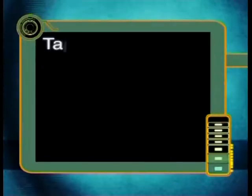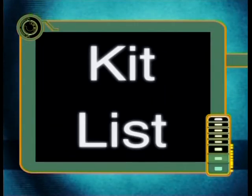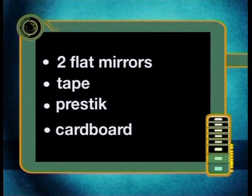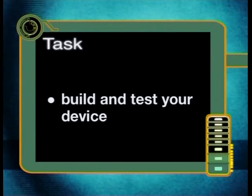So, today you have learned how it is possible for us to see images in a mirror. But before I go, I have a problem which I'd like you to solve. Pretend that you are a spy. You are stuck behind a wall and you need to see what is happening around the corner, but you can't put your head around the corner because it is dangerous. You need to design some sort of device which can help you see around the corner. You have the following equipment: two flat mirrors, tape, press stick, and cardboard. Once you have designed your device, you'll need to draw ray diagrams to show how it will work. If possible, build your device to test if it works. Remember, your teacher is there to help you if you get stuck or need ideas on where to start.